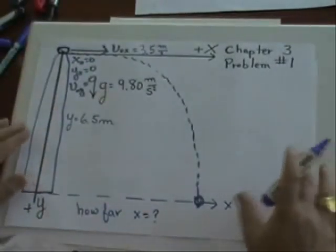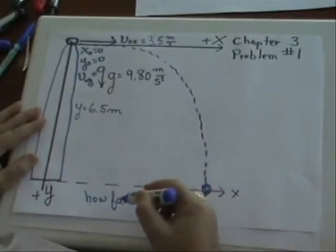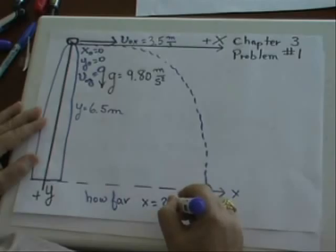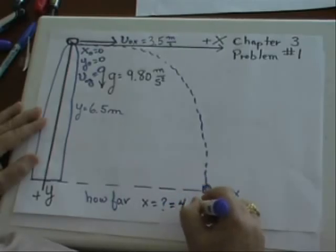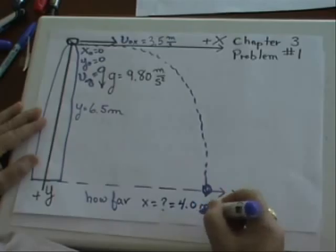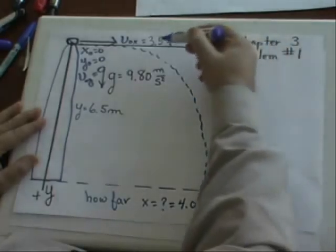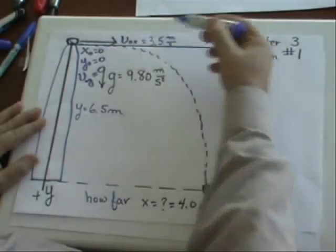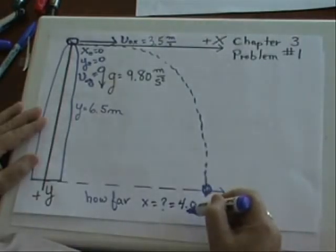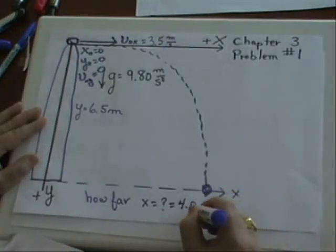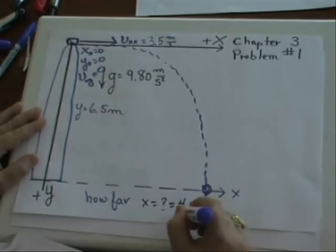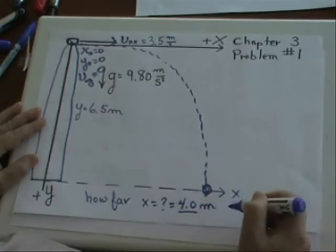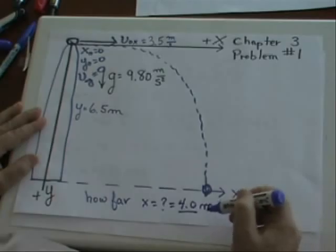So if I go back to my original diagram, how far did the tiger jump? It jumped 4.0 meters. Now, I notice that I was given two significant figures here. So my answer has two significant figures. Even though that last number is a 0, we like to have two significant figures in our answer. And the answer here is 4.0 meters.